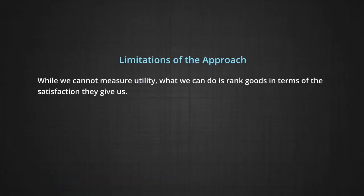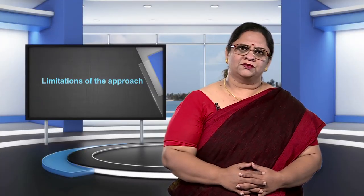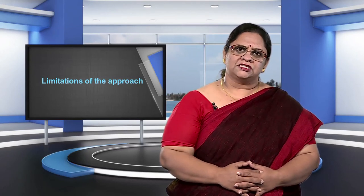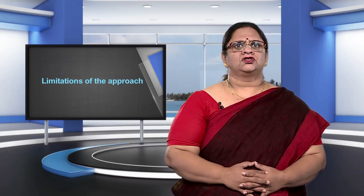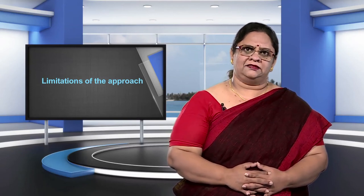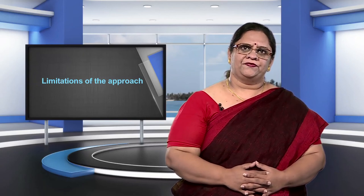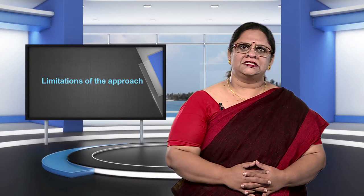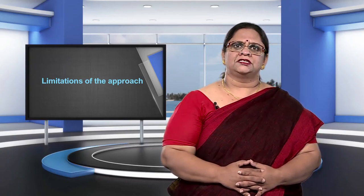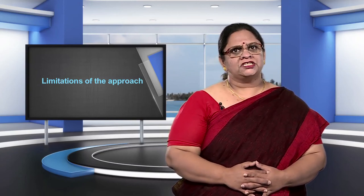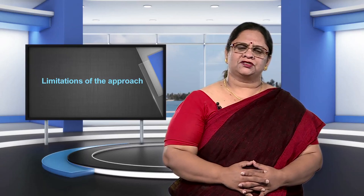While we cannot measure utility, what we can do is rank goods in terms of the satisfaction they give us. It is possible for me to say that I like mangoes more than bananas, or even more specifically, I could say that I like 2 mangoes as much as I like 3 bananas. Such an approach allows me to rank commodities in the order in which I like them without having to measure the utility of any individual unit of a commodity. It is usual to use this concept when trying to analyze consumers' decisions about what to buy.